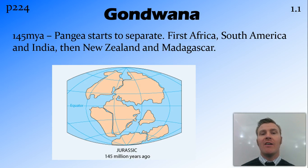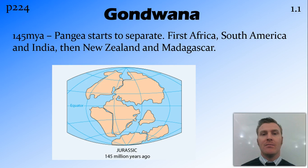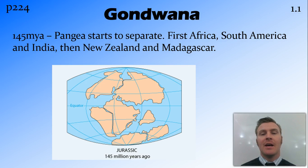145 million years ago, Gondwana starts to separate. At first, Africa, South America, and India break off the main body. Then New Zealand and Madagascar break off Australia and Africa.